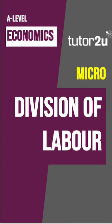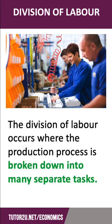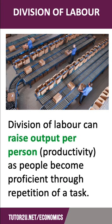60 seconds on the division of labour. The division of labour happens when the production process is broken down into many separate tasks. And this can raise output per person, which is a measure of productivity, as people become proficient through repetition of a task.